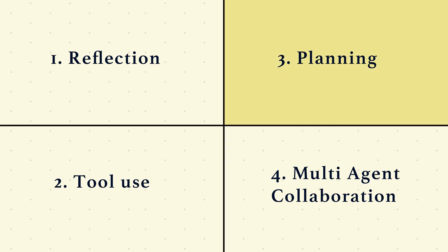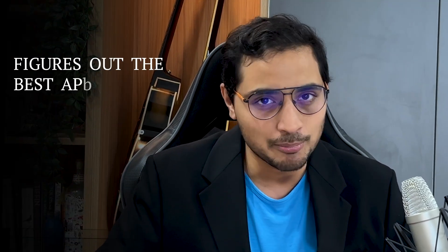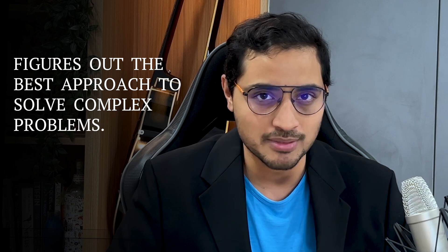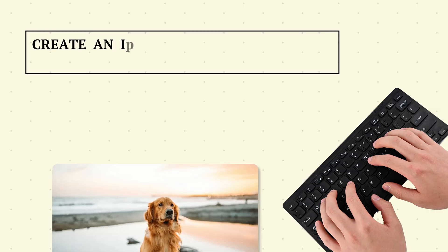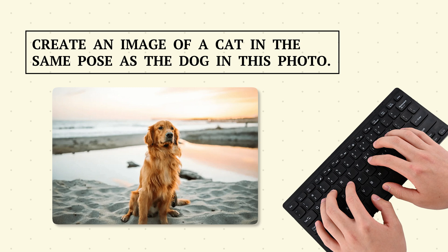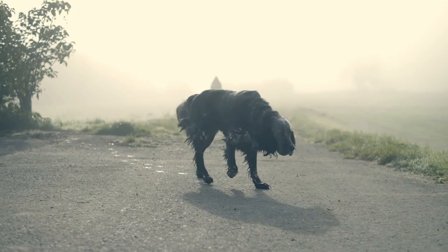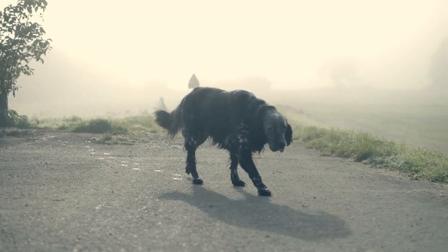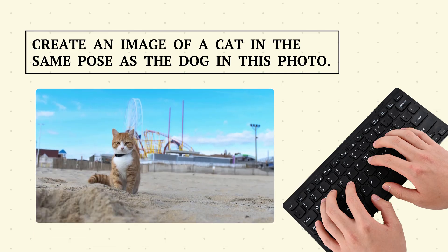The third pattern is planning and reasoning, where the AI thinks in steps. The AI doesn't just give a direct answer — it figures out the best approach to solve complex problems. For example, you ask the AI to 'create an image of a cat in the same pose as the dog in this photo.' It analyzes the dog's pose, generates the cat image, and ensures the same posture.